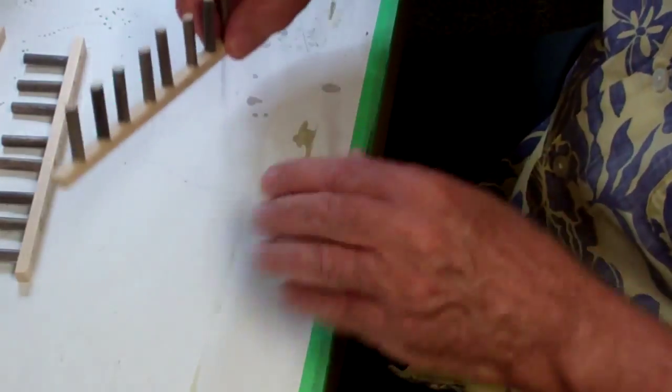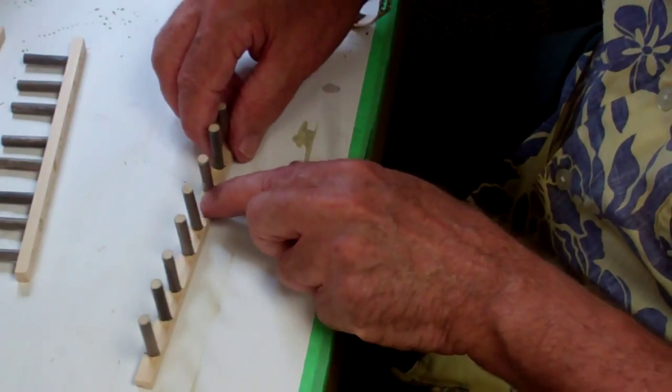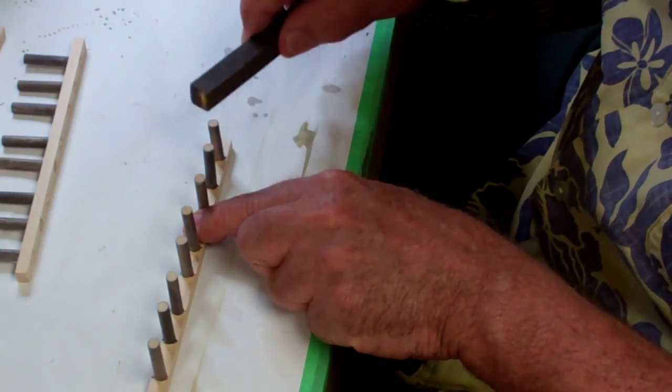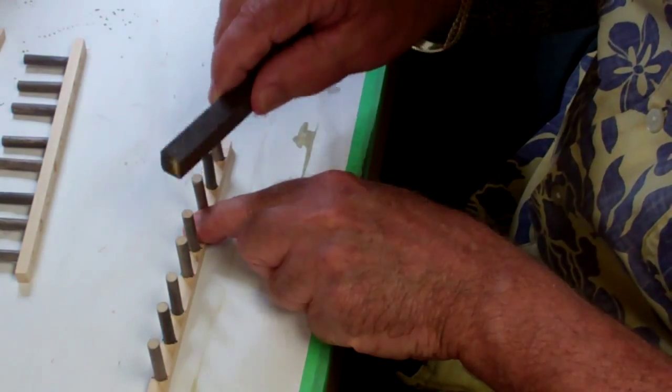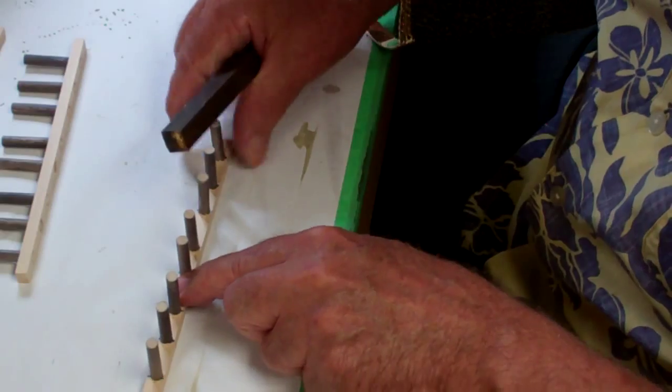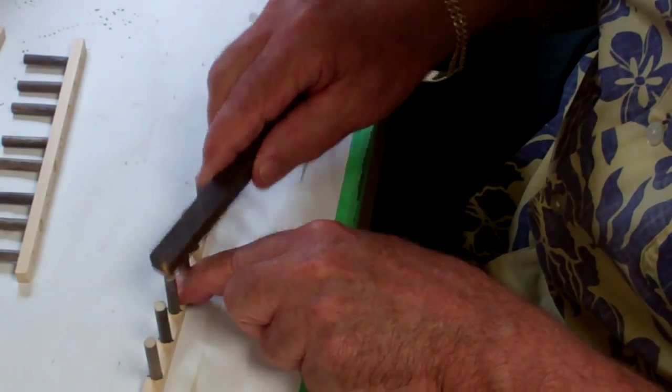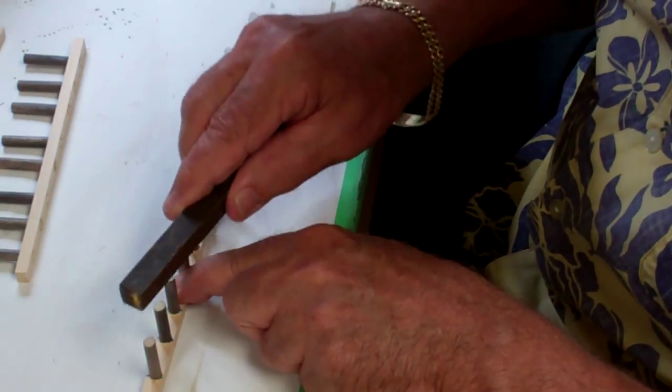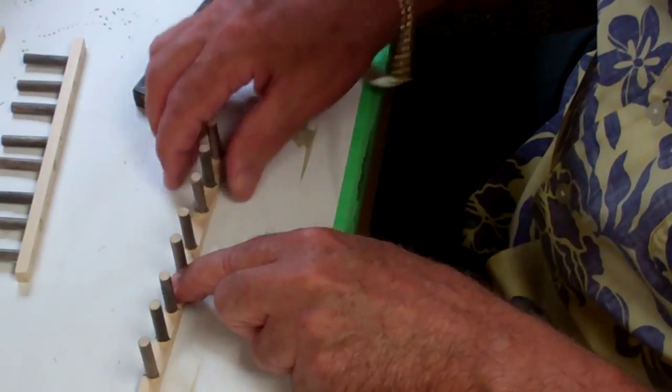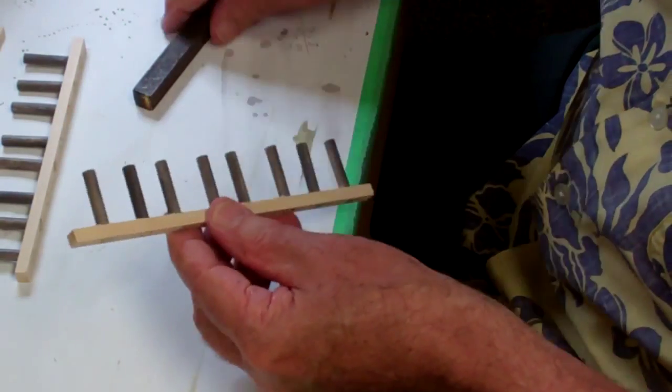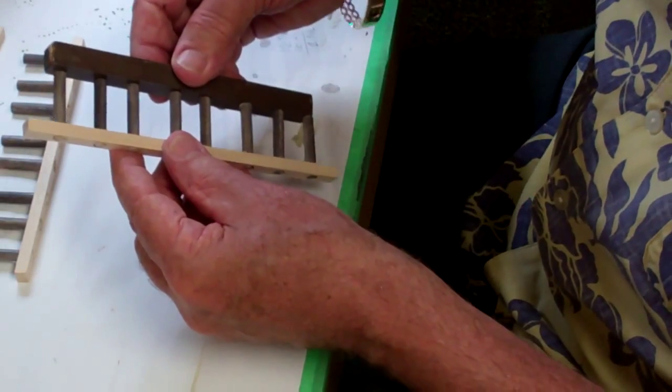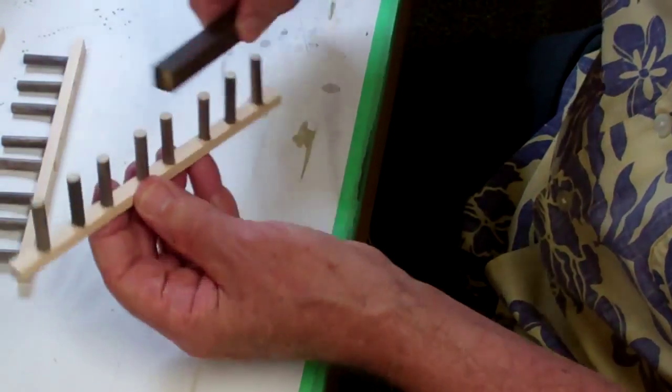And then nice flat surface like so. And I can just, you can hear the tone, the sound change when it hits the table top. That way they now flush all the way through here. Double check with a straight edge and they're all flush.